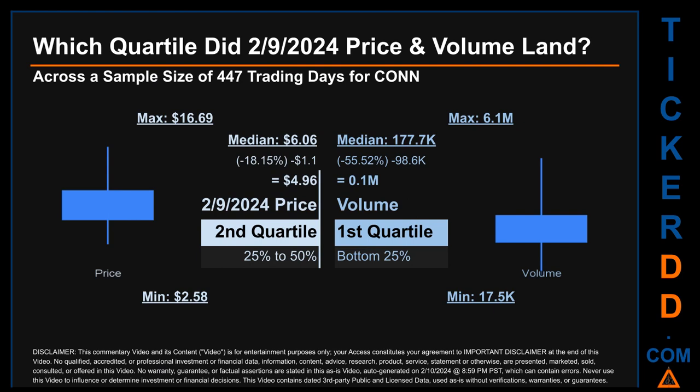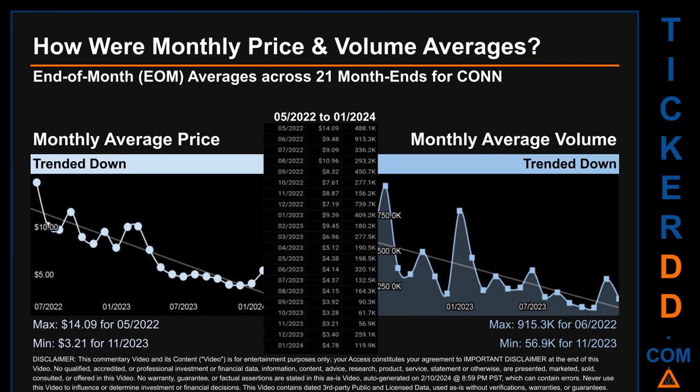Descriptively, Conn has a median price of $6.06. Therefore, the February 9th, 2024 price was lower from that middle marker by 18.15%. The day's volume of 0.1 million was less than the median by 55.52%.